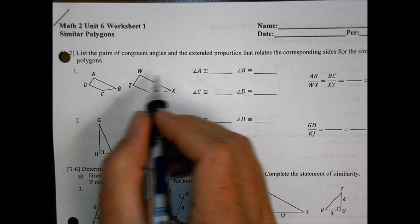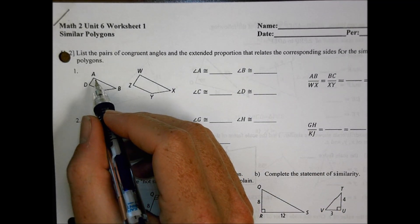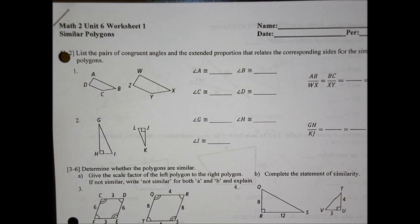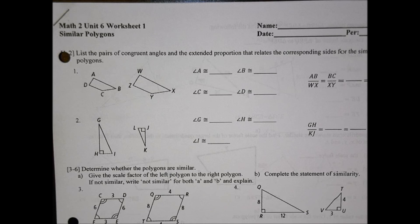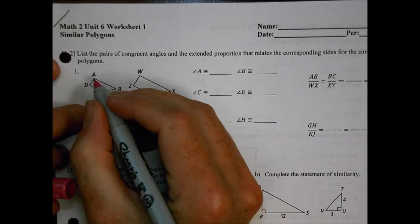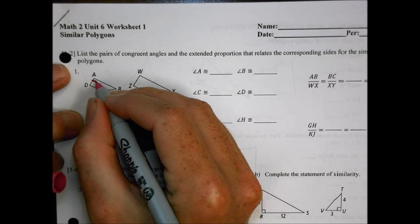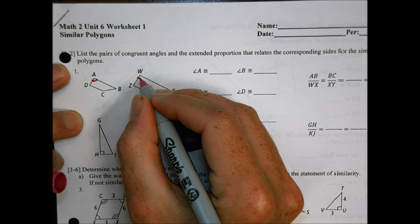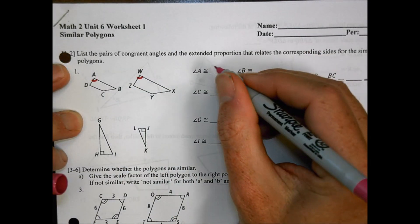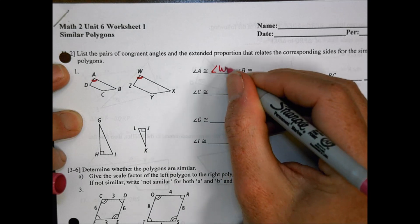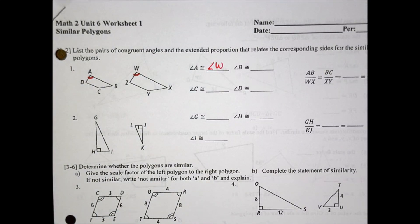So first of all, if it says angle A, which is right here, we want to know what that one is going to be similar to. Because we have A listed up on this corner, looking at just where that's at in location, we're going to look for the one that matches over here, which is going to be the same as angle W.